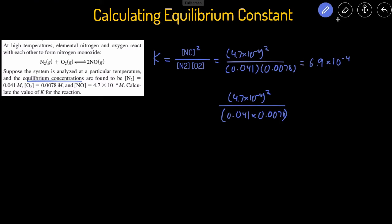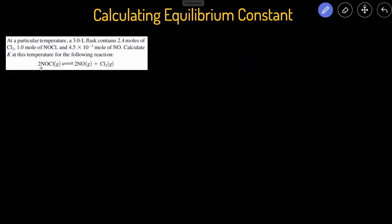The next problem is pretty similar to the one we saw earlier. We have a balanced chemical reaction and it gives us the equilibrium values of the reactants and products. But this time, it's given to us in moles and also gives us the volume. So the first thing we have to do — just like the previous problem — is start by writing out the equilibrium constant expression, which is the concentration of products over reactants.